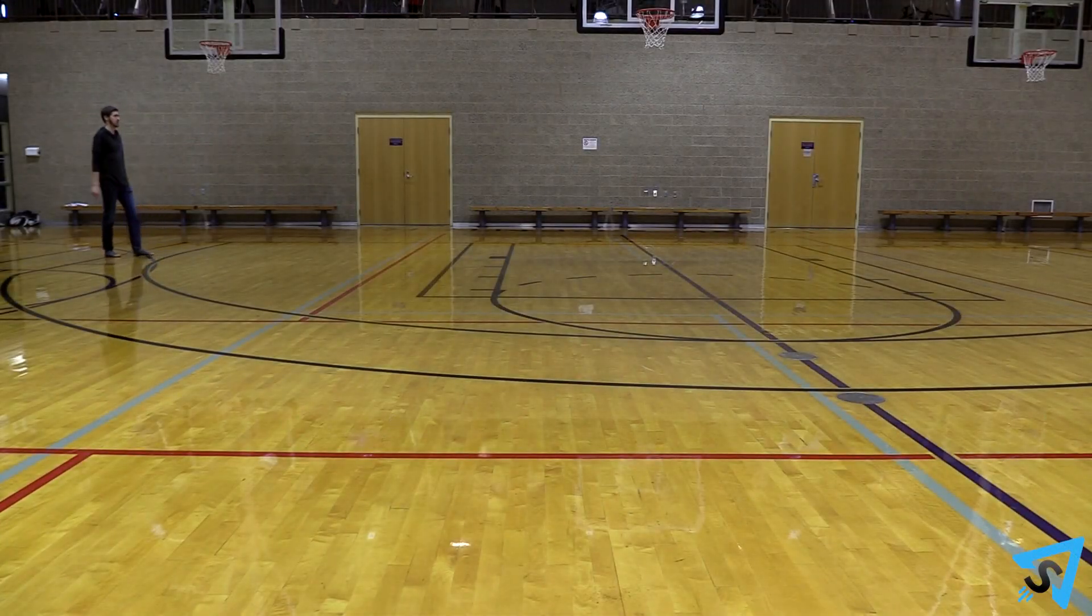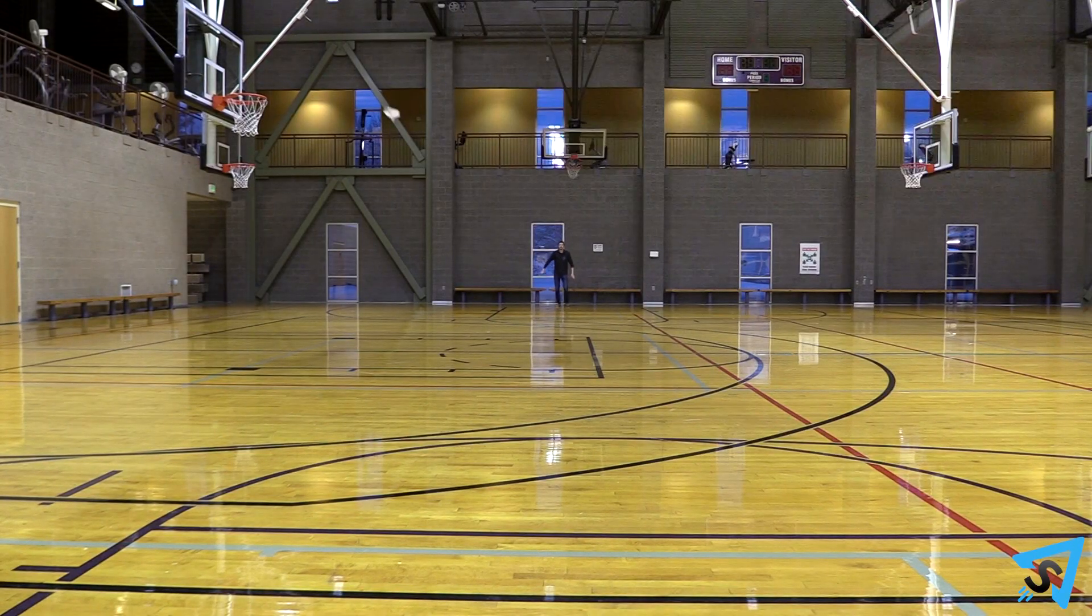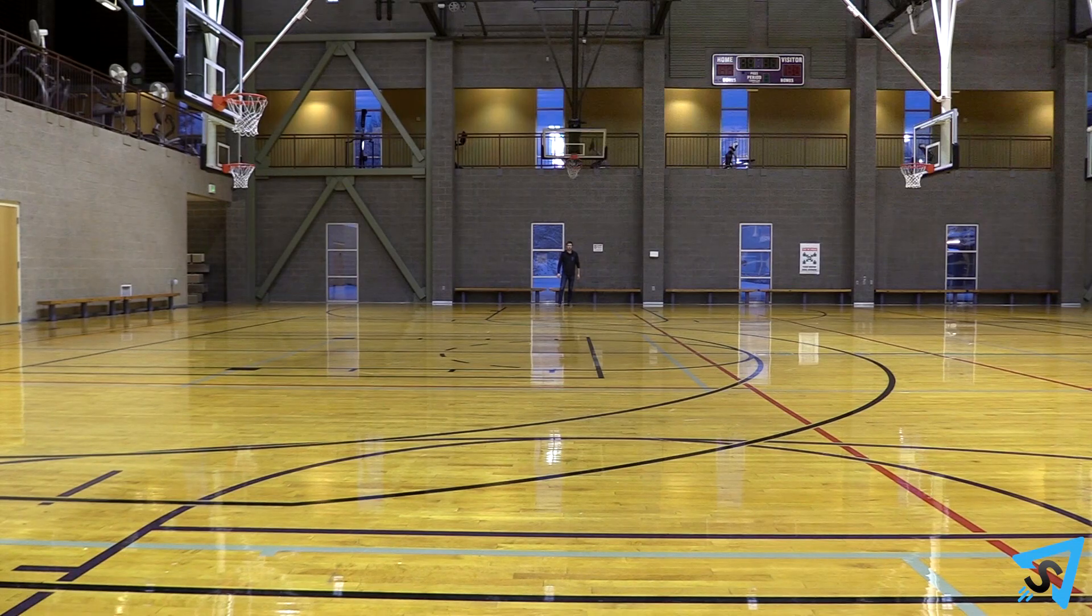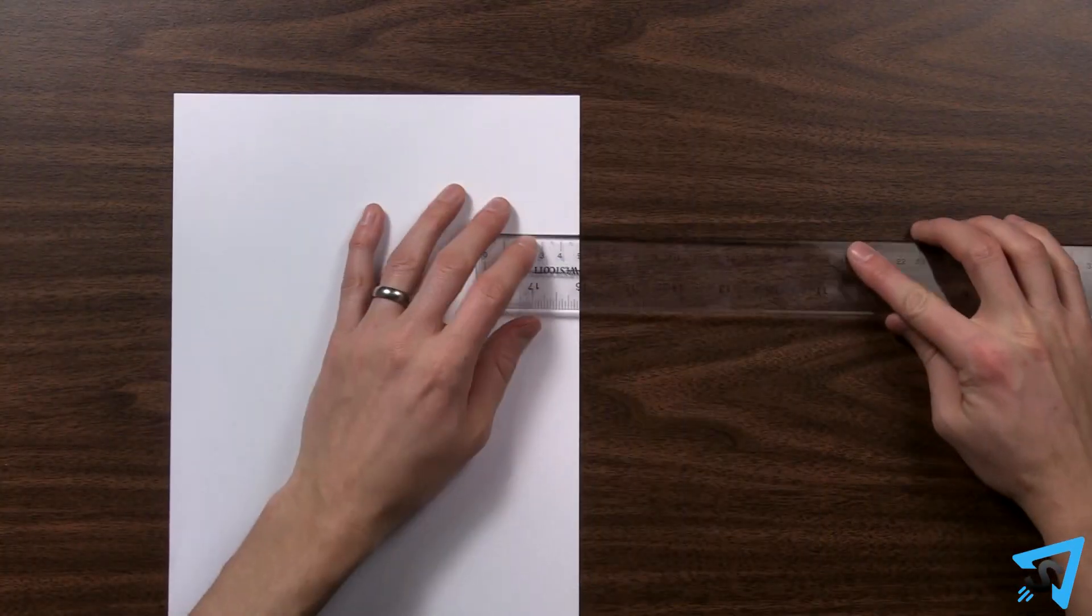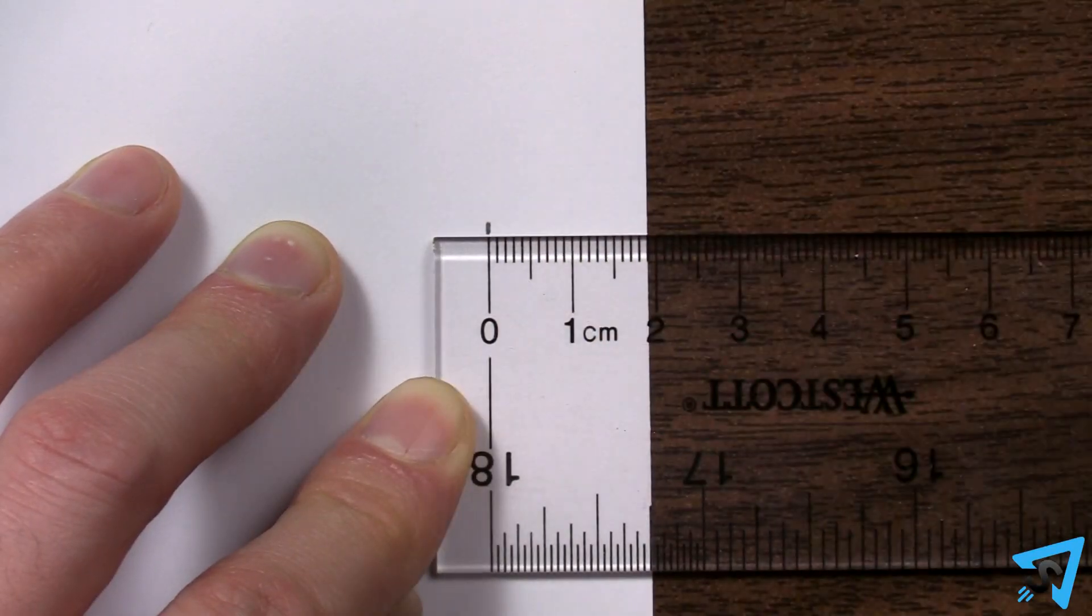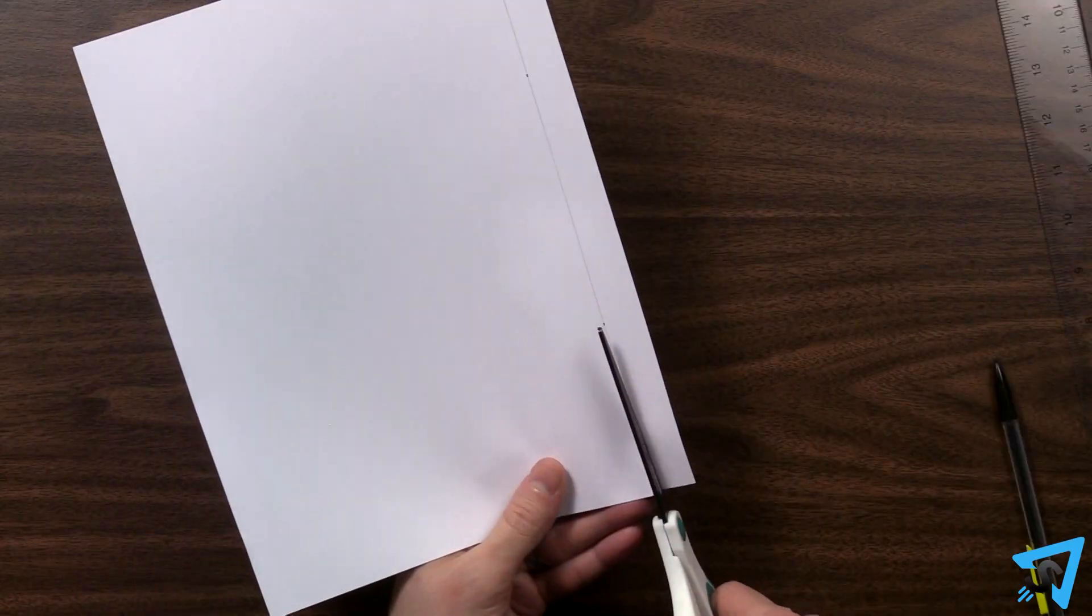How to Fold the World Record Paper Airplane. Using a standard 8.5x11 piece of paper, cut 19mm off the long edge.